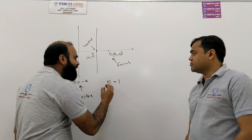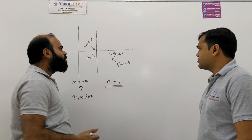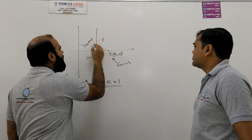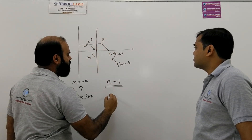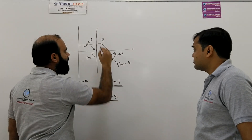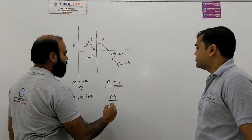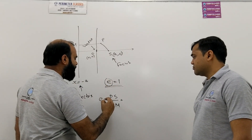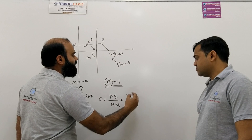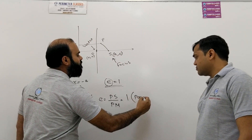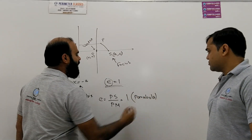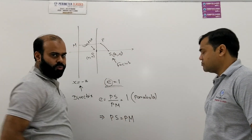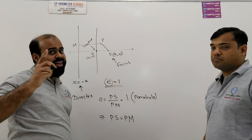Eccentricity means: if we take any point such that its distance from the focus divided by its distance from the directrix equals the eccentricity, then in case of parabola this equals 1. This simply means the distance PS is equal to the distance PM.